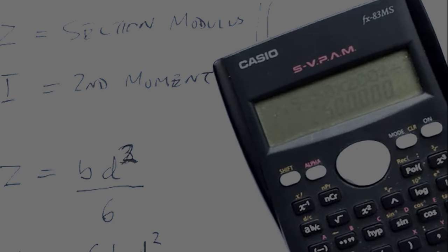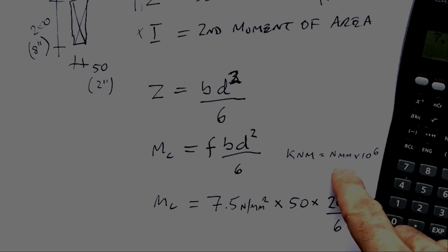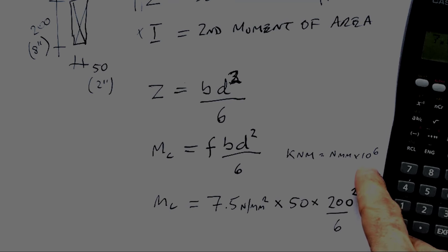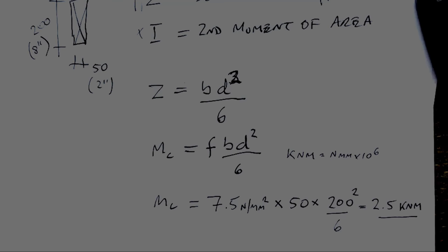Now one kilonewton meter is equal to newton millimeters times 10 to the 6, so it's a million times more. So the answer is 2.5 kilonewton meters.